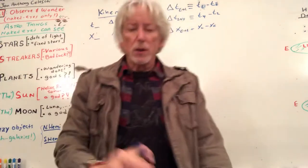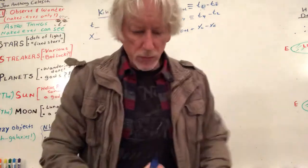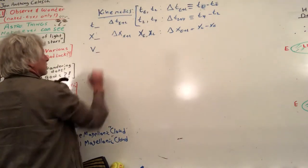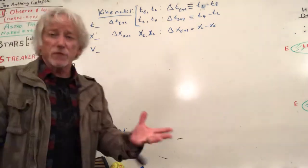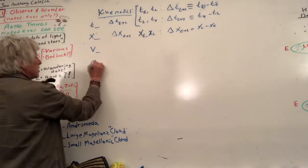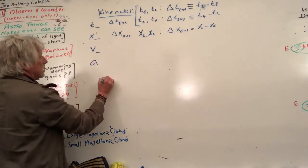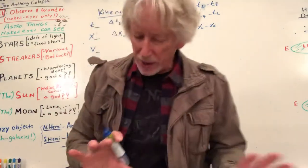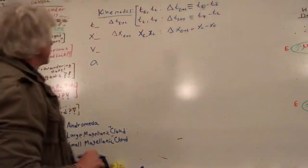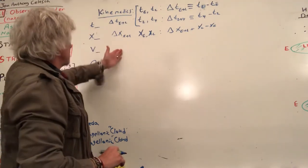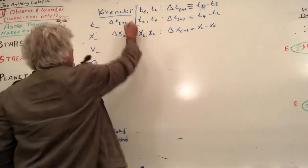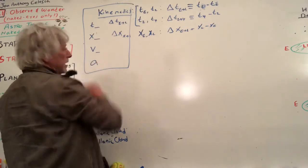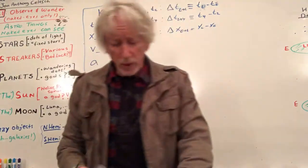We can have velocities at any particular time, and we can have accelerations — that gets a little tricky but we can keep it simple. This is what kinematics is: keeping track of the motion. We can also have a change in velocity.